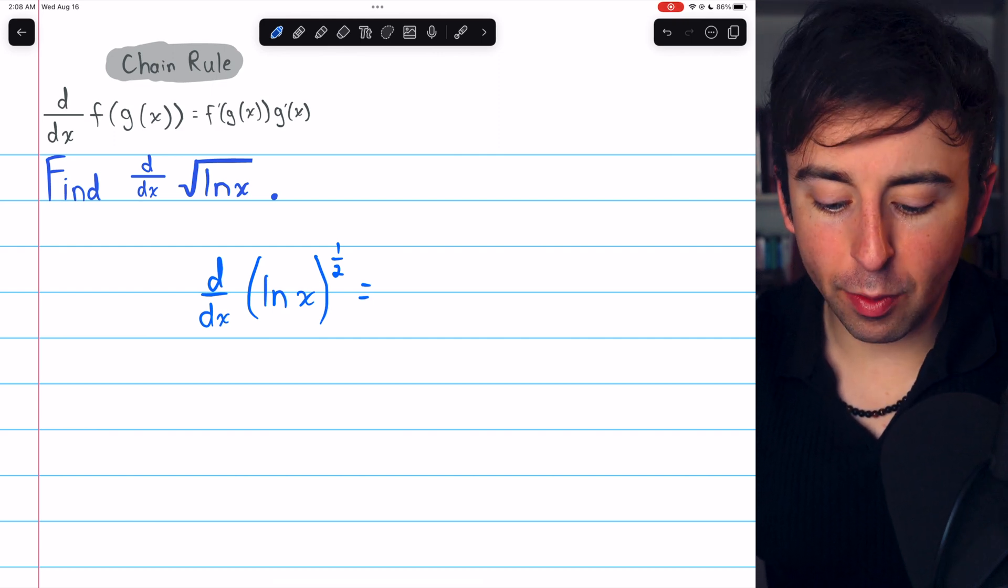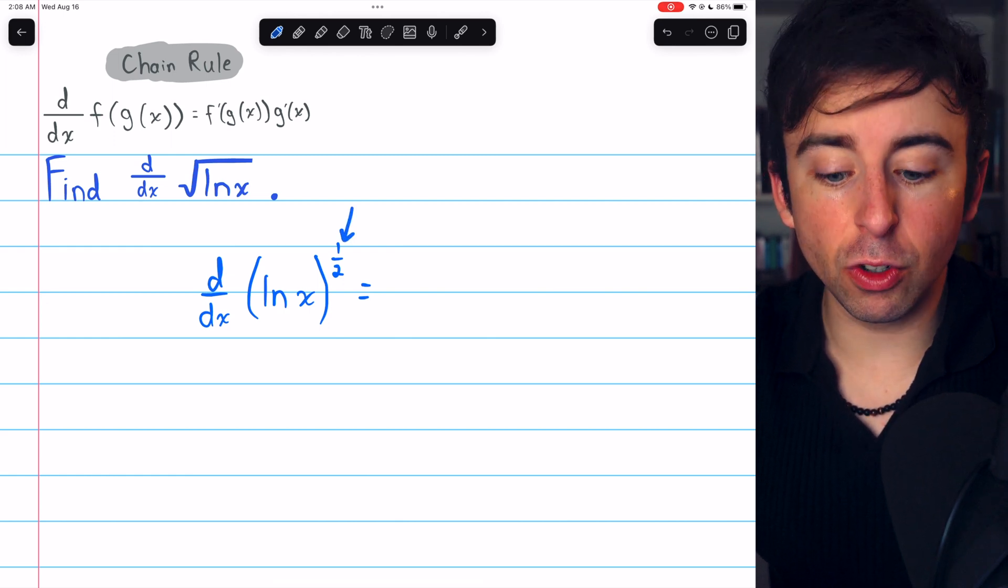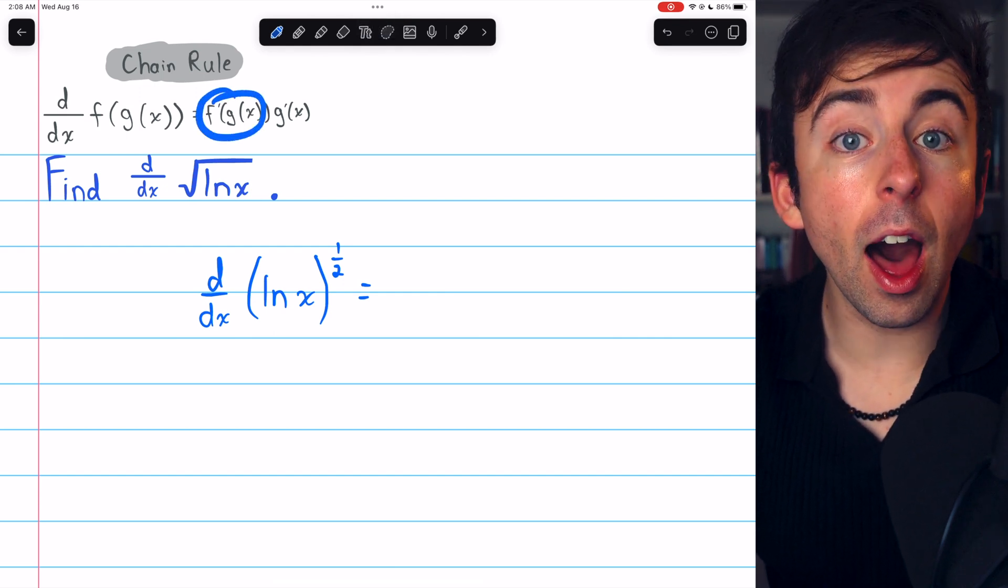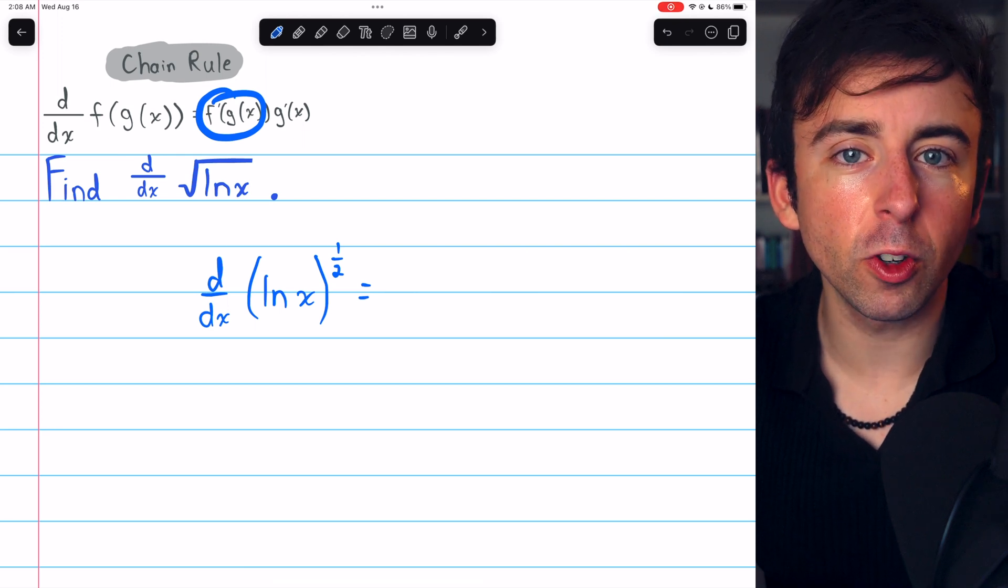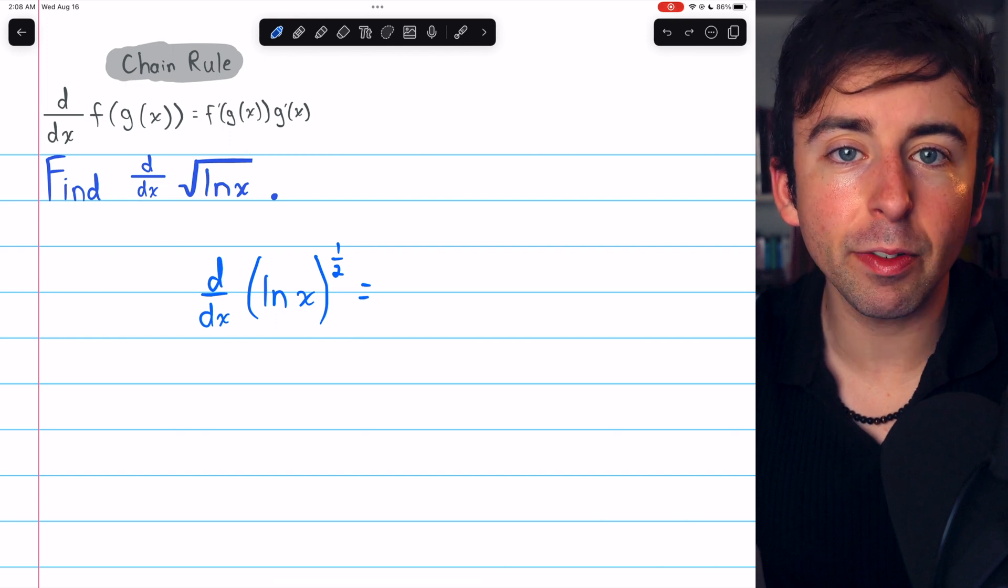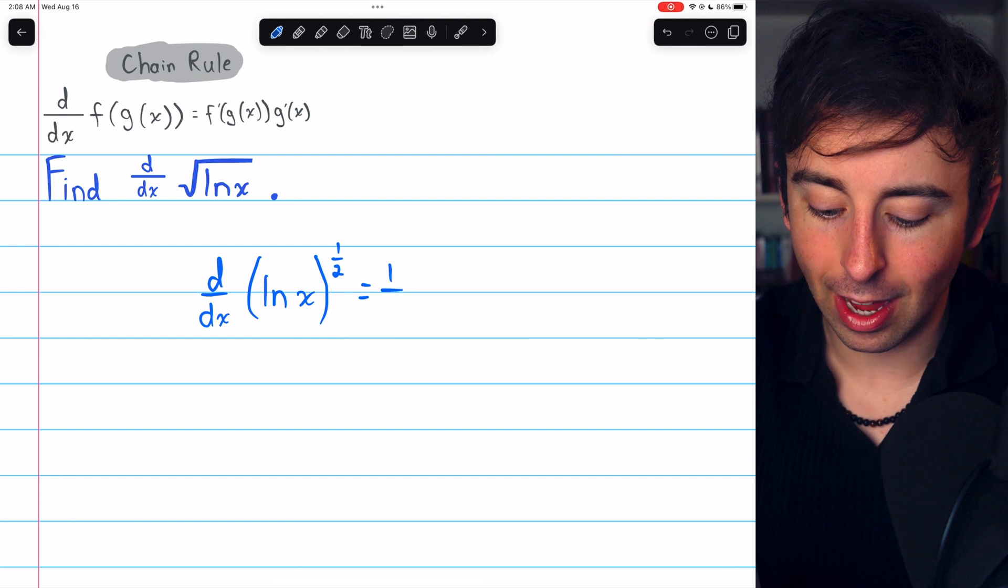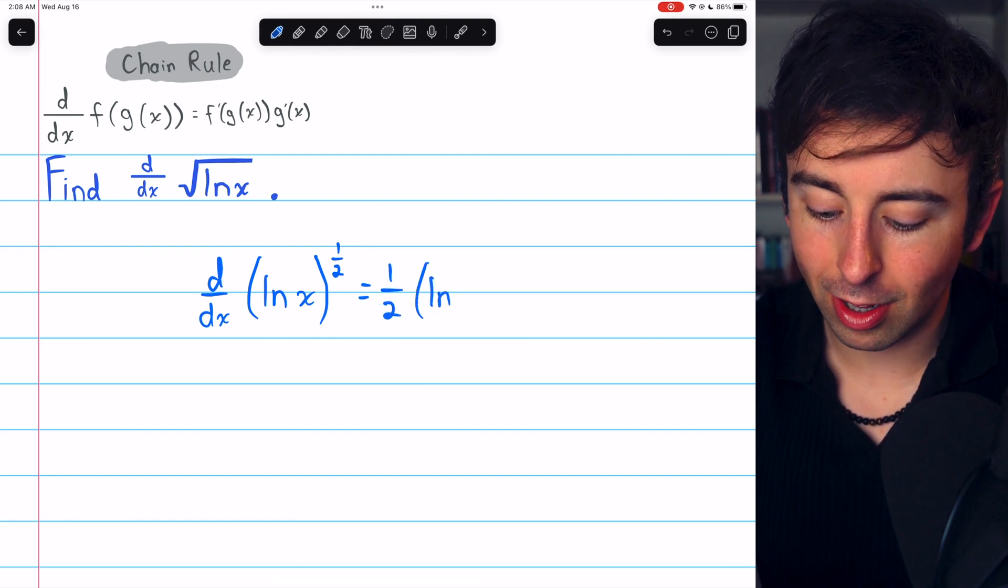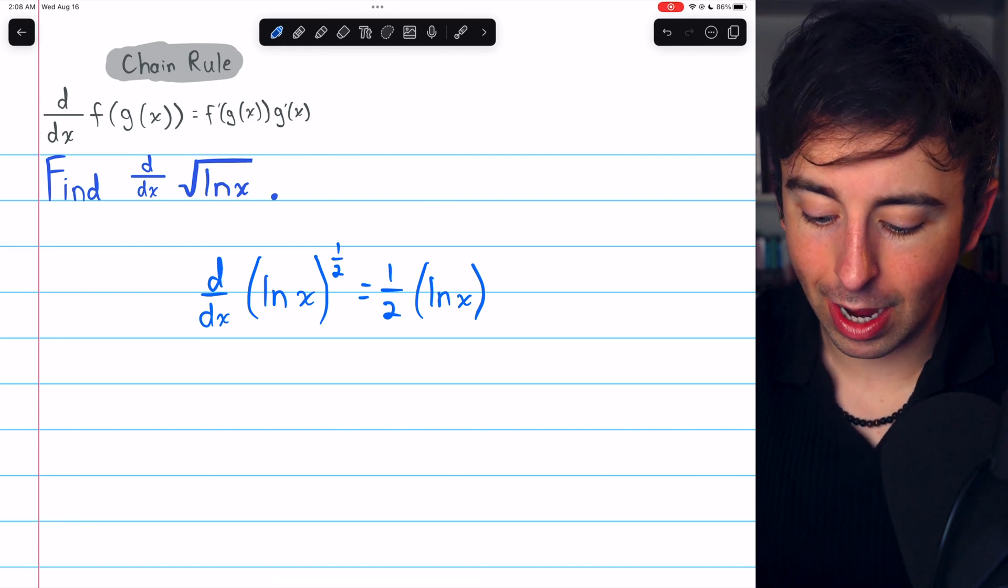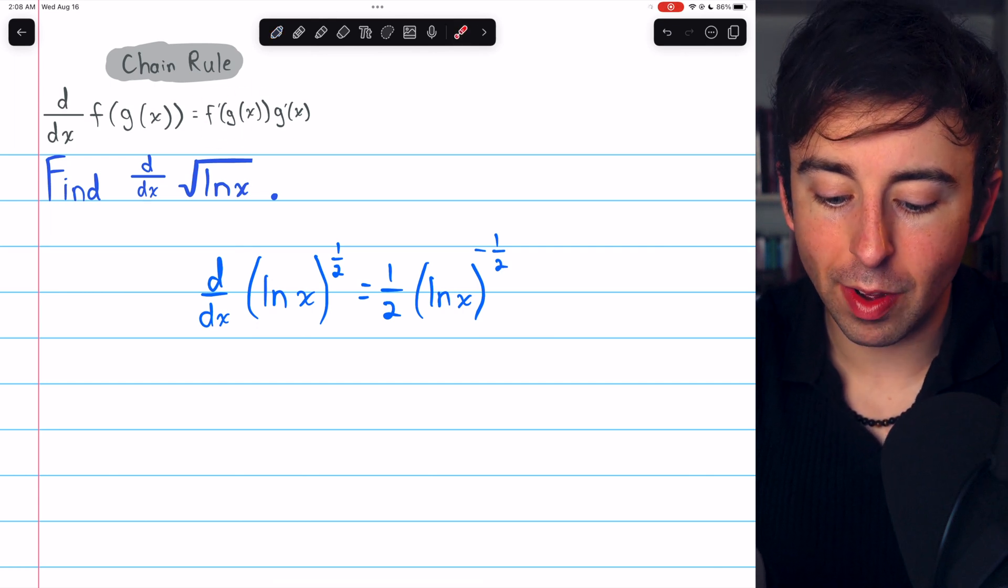Again, the outside function is the square root or that power of 1 half. And we need to begin by taking the derivative, f prime of g of x, of that outside function, and leave the inside function unchanged. To take the derivative of a thing to a power of 1 half, we're just applying the power rule. We need to bring the power down as a factor, leave the inside unchanged, that's our g of x, and reduce the exponent by 1. 1 half minus 1 is minus 1 half. And that is f prime of g of x.